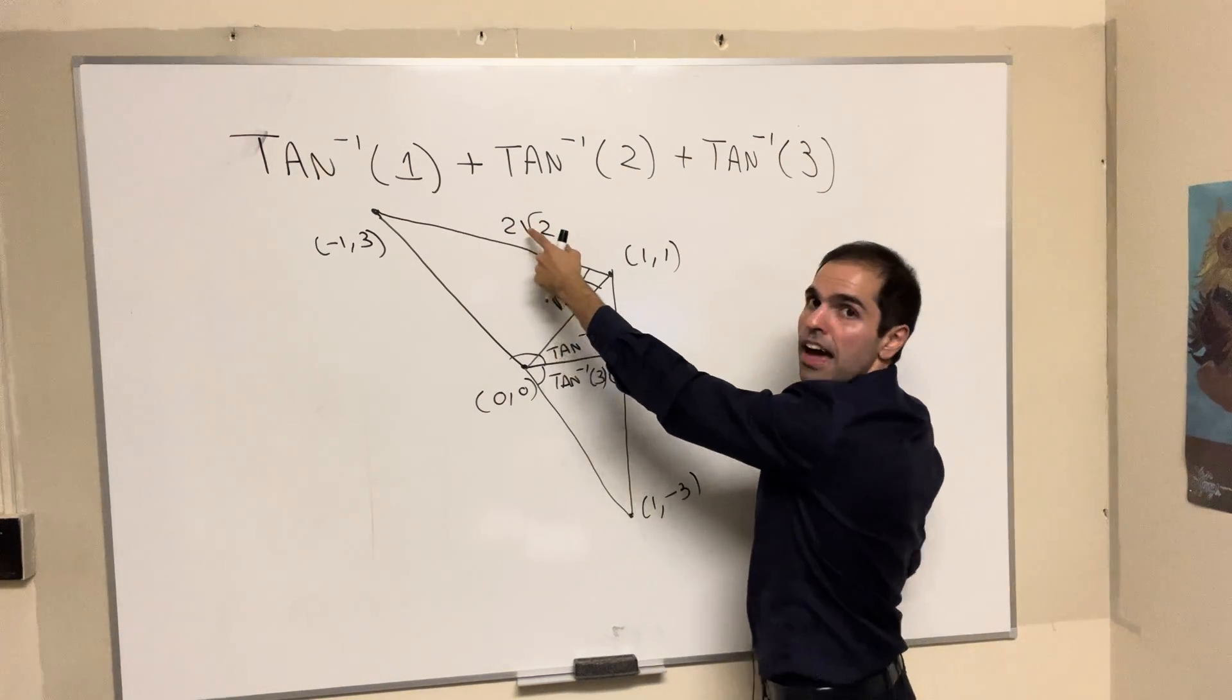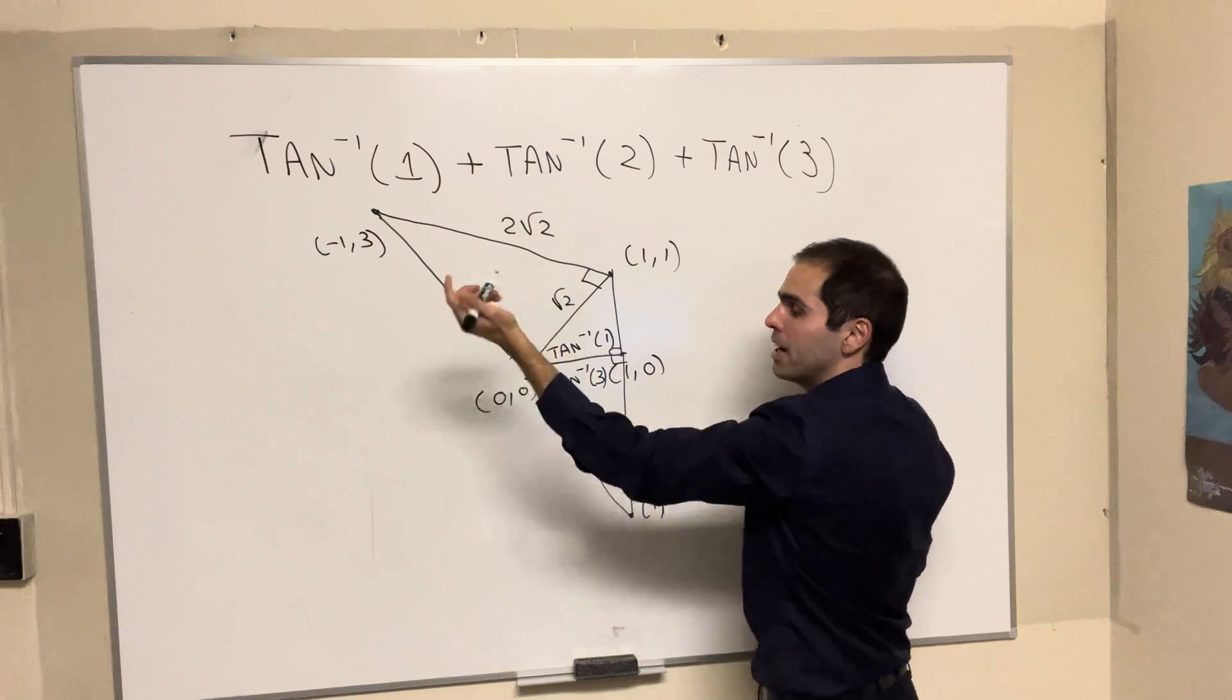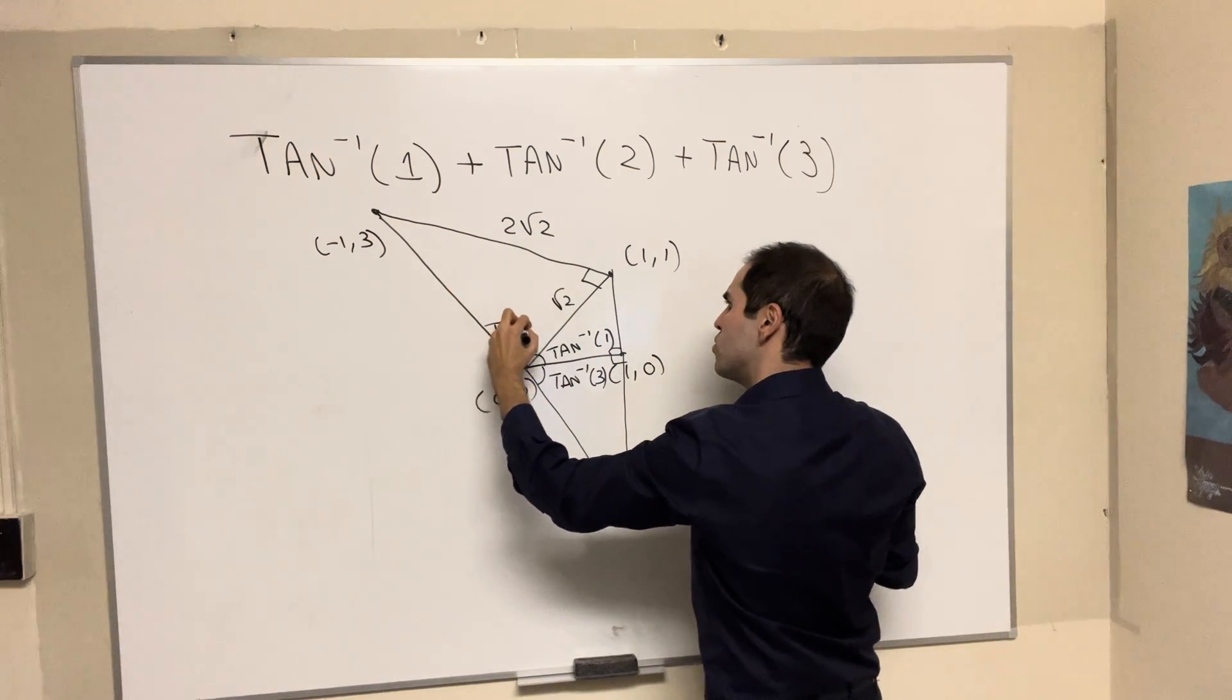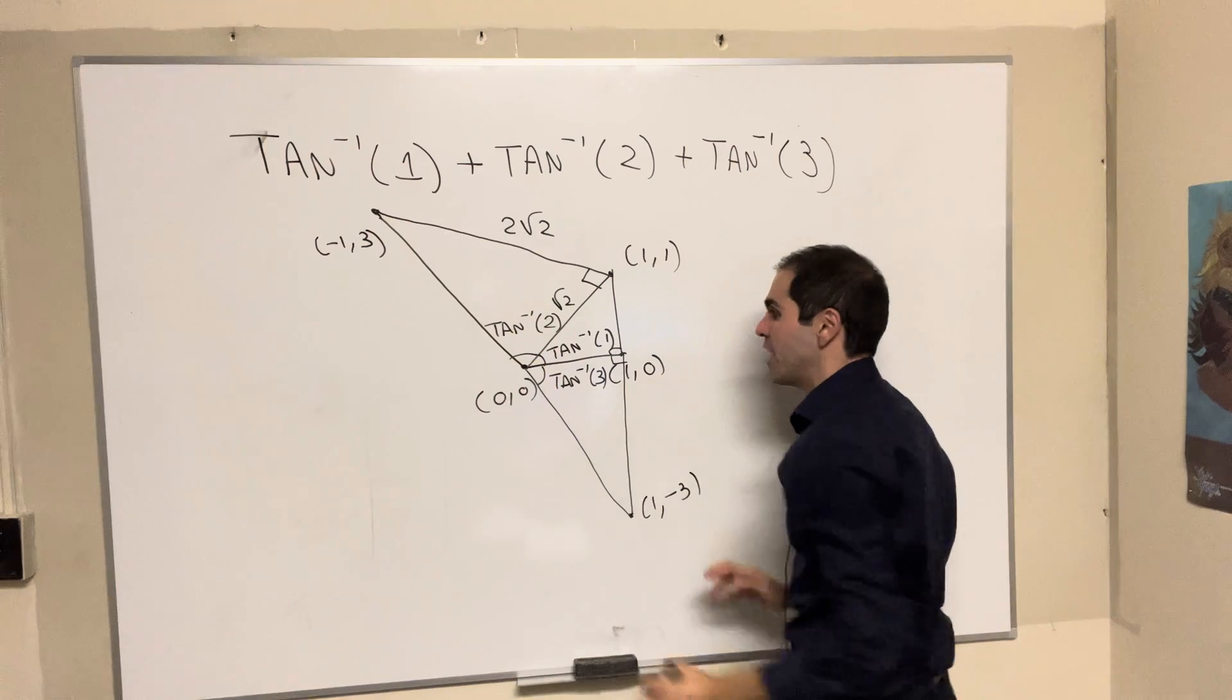And well, what is the tangent? This divided by this, which is 2. So in fact, this angle is arctangent of 2.